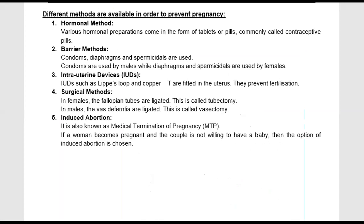The last topic is pregnancy. Pregnancy occurs when an ovum and sperm fertilize. For this, the ovum and sperm must both be present at the same site. There are many different methods to avoid pregnancy. The first is the hormonal method — the hormones needed to maintain pregnancy, if they are absent or altered in the body, the pregnancy will not be maintained.